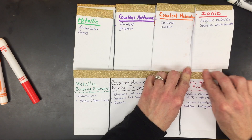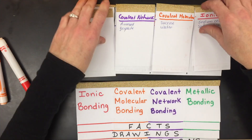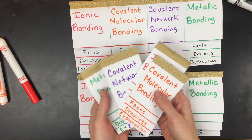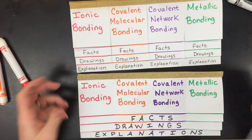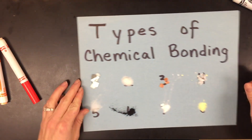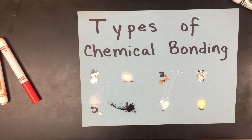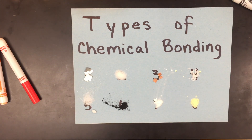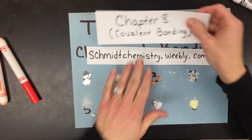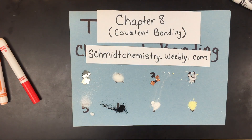Choose which version you like best — they're all great. The goal is to be able to determine what kind of bond type exists in a substance based on its physical and chemical properties. Check out the notes at schmidtchemistry.weebly.com — it's part of chapter 8 on covalent bonding.